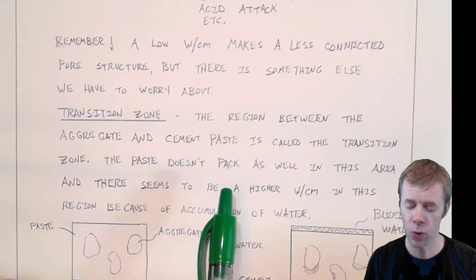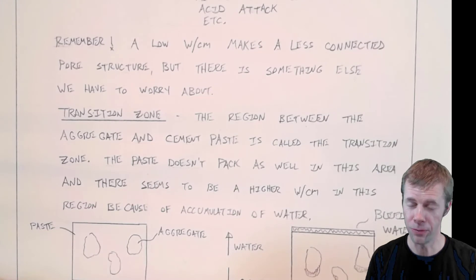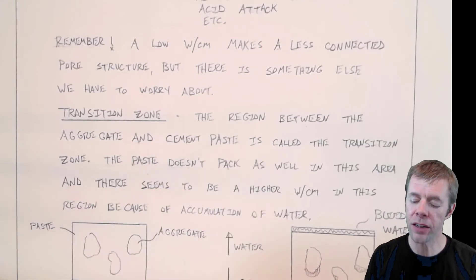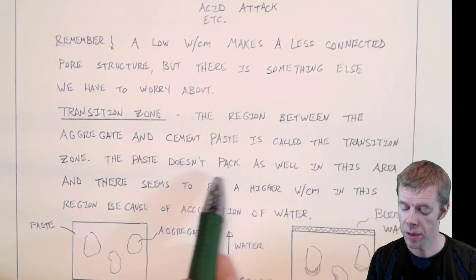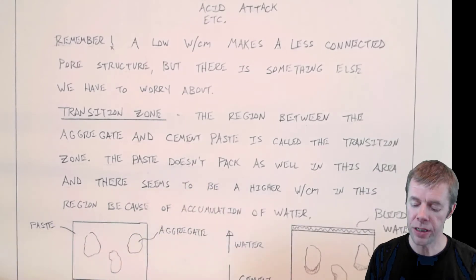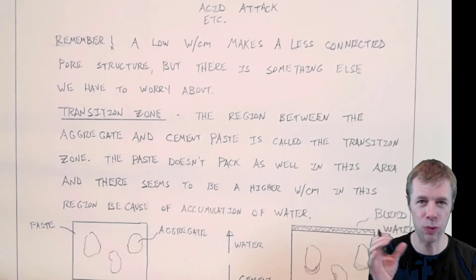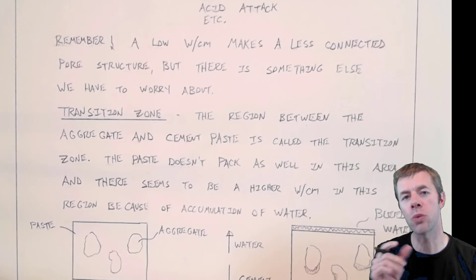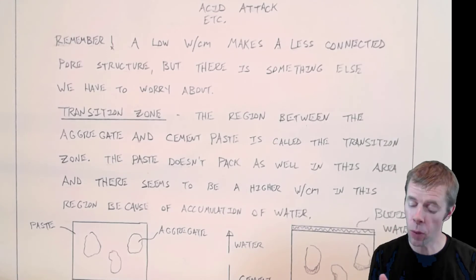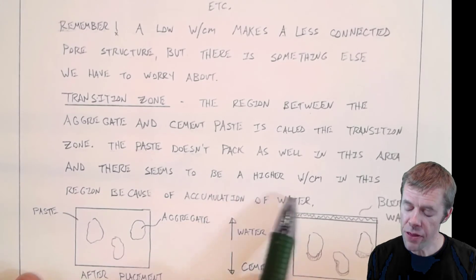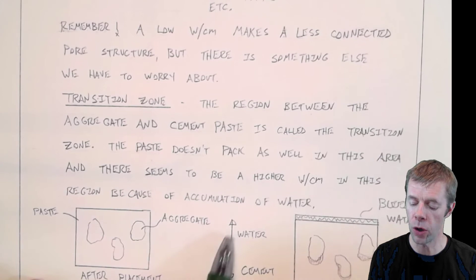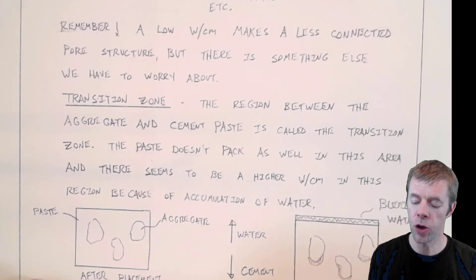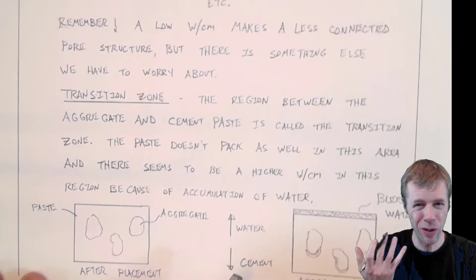Something called the transition zone. It's kind of like the twilight zone. This is the region between the aggregate and the cement paste. And it's called the transition zone. Some people call it the TZ for short. I just call it transition zone. And in this region, the paste doesn't pack as well. The cement grains don't pack as well around the aggregate particles. That's one thing. And there also seems to be a higher water-to-cement ratio in this region because of an accumulation of water.